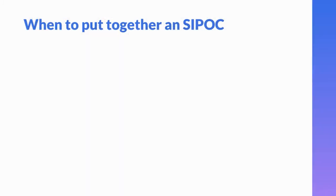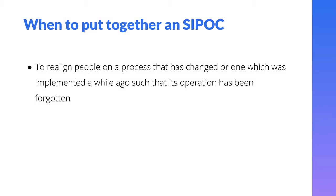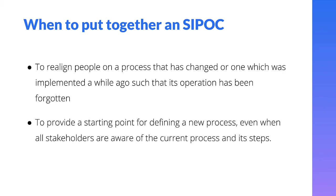Now let's talk about some scenarios when you should put together a SIPOC. A SIPOC can be used to realign people on a process that has changed, or one which was implemented a while ago such that its operation has been forgotten. You can also use a SIPOC to provide a starting point for defining a new process, even when all stakeholders are aware of the current process and its steps.